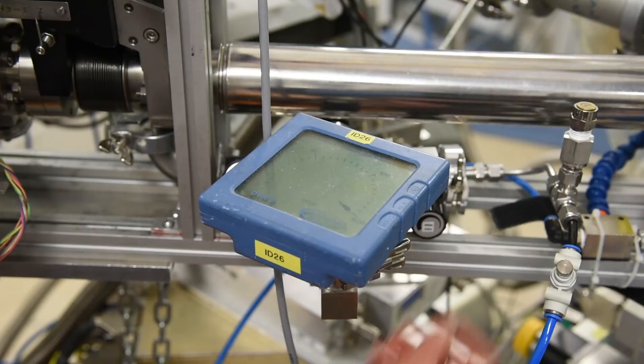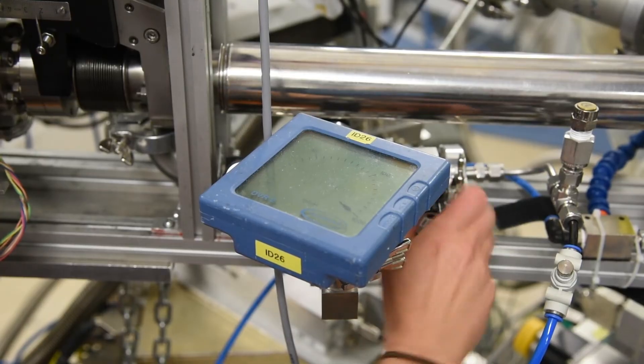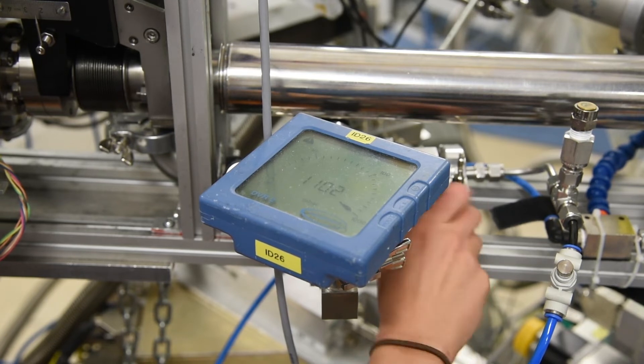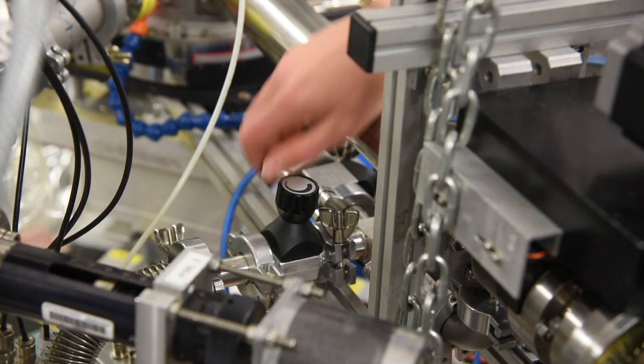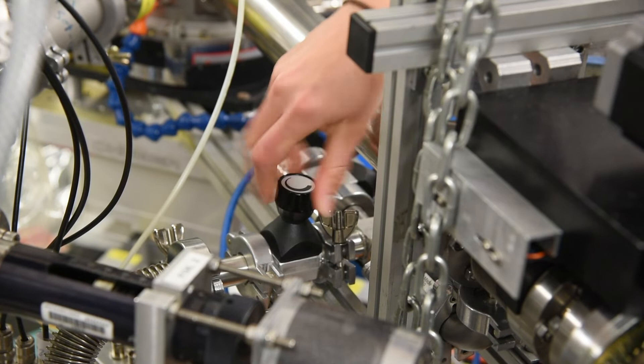Pump on the sample volume to seal it. Turn off the helium flow by closing the large black metal valve. Open the valve behind connected to a pump.